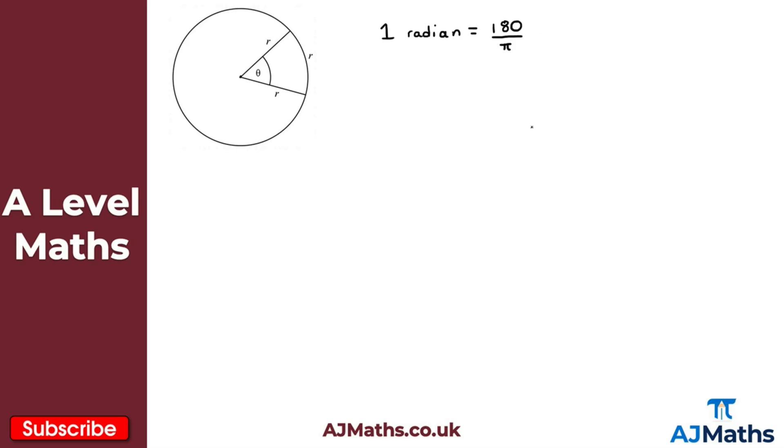180 divided by π, and in this case then this would be approximately 57.3 degrees. In terms of the notation here to represent radians, for example let's say we want to represent one radian.